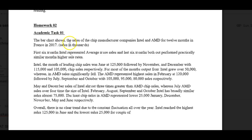A couple of little things with your punctuation — no comma here, and the full stop should go after the parenthesis. You wrote: 'first six months Intel represented average more sales and last six months both outperformed particularly similar months higher sale rates.' Grammatically this has problems that make it difficult to follow. In the first six months Intel had on average more sales. And in the last six months — 'both outperformed' doesn't make sense. How can both outperform each other? And 'practically similar months higher sales rate' — I can't make any sense out of that.